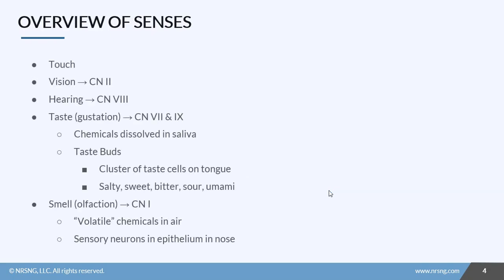So let's just talk a quick overview of senses. There's five major senses: touch, which we are going to talk about in detail in this lesson; vision, which is controlled by cranial nerve 2; and hearing, which is cranial nerve 8.